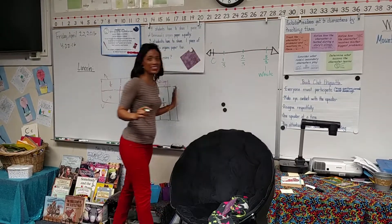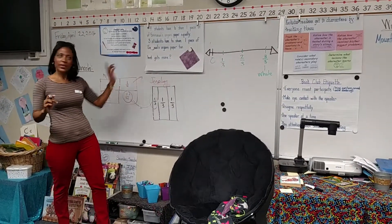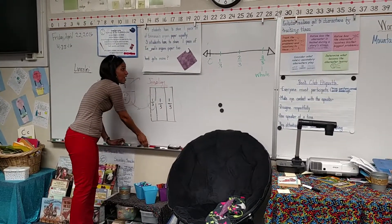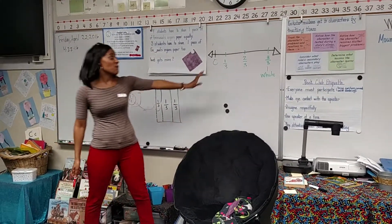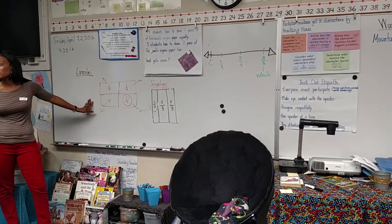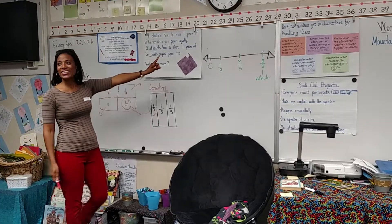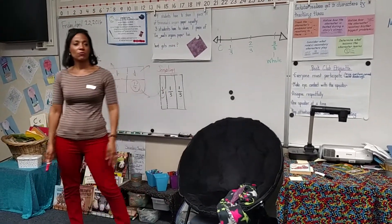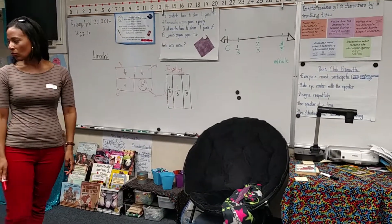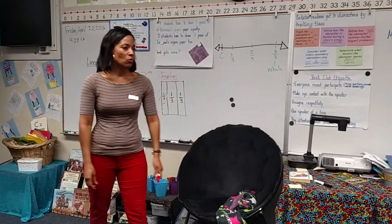Now let's compare these on a number line — we did it with a picture. Now let's do one-fourth on top in red. If we were going to divide this into four equal parts, what fraction would come first? Tell a partner. One-fourth.